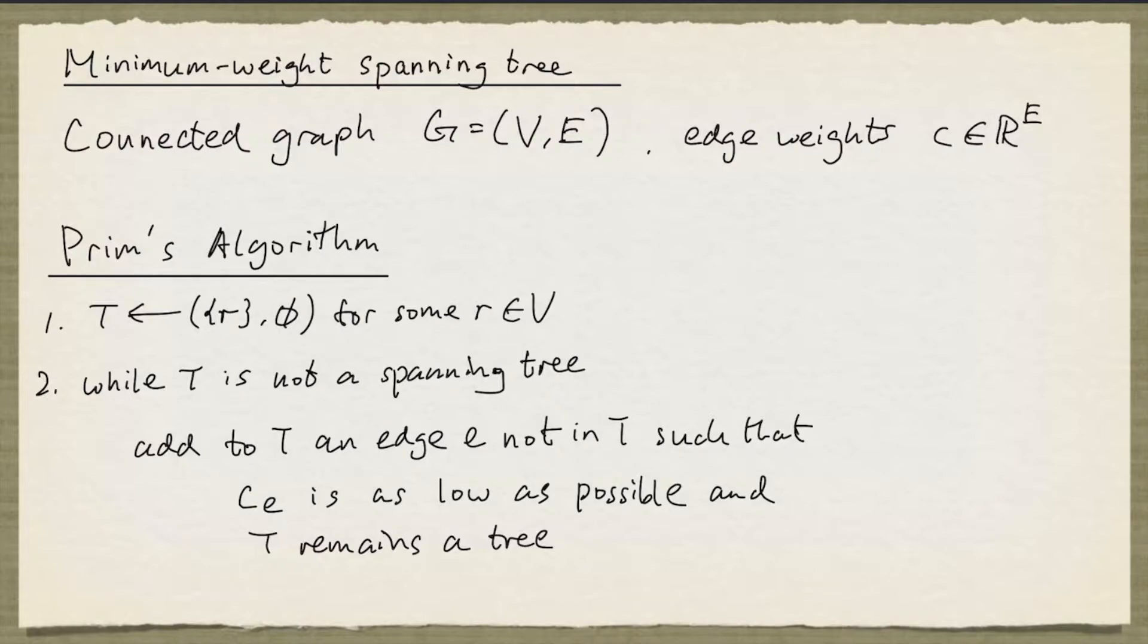We find an edge E that is not in T with least possible cost so that when E is added to T, T remains a tree. And when this loop terminates, T will be a minimum weight spanning tree.